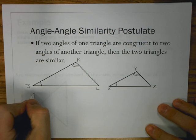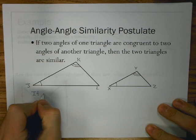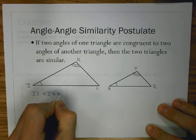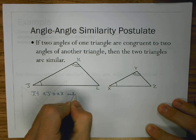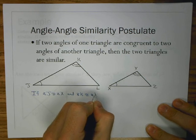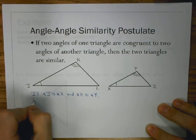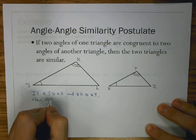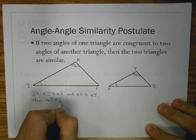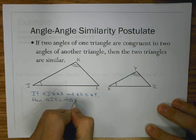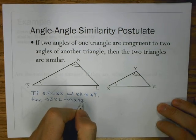So let's write out what we have. If we write this by our diagram, we have angle J is congruent to angle X, and angle K is congruent to angle Y. Then we have the two triangles: JKL is similar to XYZ.